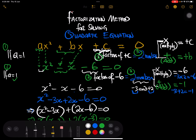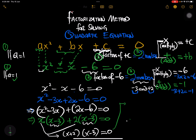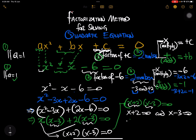We can see that x minus 3 is common in both groups. So we combine: x plus 2, times x minus 3, all equal to zero. This means x plus 2 equals zero, and x minus 3 equals zero.